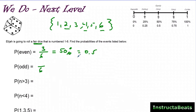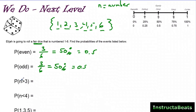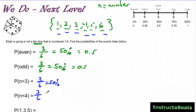Same thing with the odd numbers — there are still six outcomes, and one, three, five are the three odd numbers. So our numerator is three, and there's a 50% chance it lands on an odd number. Sometimes it's not asking about a specific outcome but grouping them together. What's the probability it lands on a number greater than three? The numbers greater than three are four, five, and six — so there's a 50% chance the number you land on will be greater than three. Similarly, less than four — that's one, two, three — also a 50% chance.